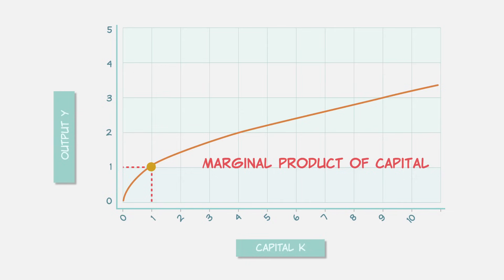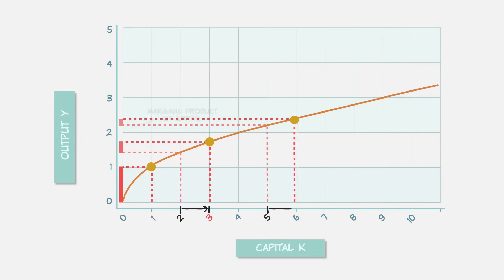The marginal product of capital describes how much additional output is produced with each additional unit of capital. Notice that the marginal product of the first unit of capital is really high. But as the capital stock grows, the marginal product of capital is less and less and less.